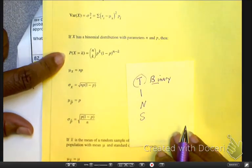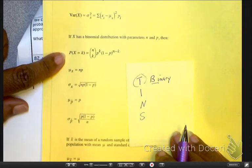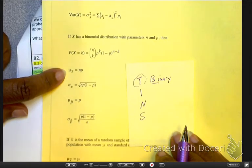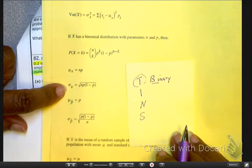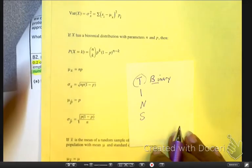Now, with that being said, this formula right here gives me the probability of success. And then this formula right here gives me the mean and the standard deviation of a binomial distribution.